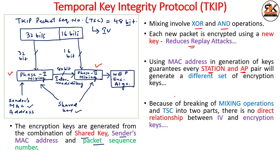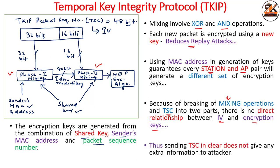The mixing operations are broken into two phases, and the TSC sequence counter is also broken into two parts. There is no direct relationship between IV and encryption keys, so if an attacker obtains the IV during communication, it does not provide any extra information. That is another improvement over WEP. Because of that, we can send the TSC in clear without further encryption. Since TSC is a 48-bit initialization vector, it guarantees that IVs will not be reused with the same shared key. This is how TKIP works.